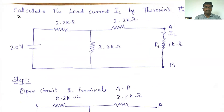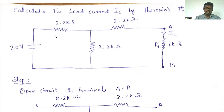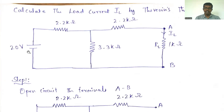Good morning everyone. Today we are going to see a small problem on Thevenin's theorem, as we have already covered it in detail. Thevenin's theorem states that in any linear bilateral or complex DC network, all voltage and current sources are replaced by an equivalent Thevenin's voltage source, and all resistances by the equivalent Thevenin's resistance, with the load resistance connected in series. So VTH, RTH, and load resistance should all be connected in series.